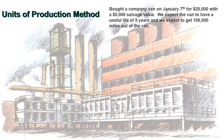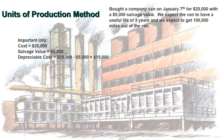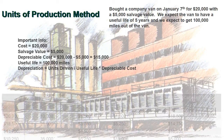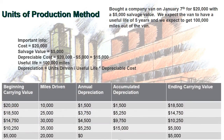The third method is units of production. The important information: cost is $20,000, salvage value is $5,000, and depreciable cost is $15,000 — same as before. However, useful life is now expressed in miles: 100,000 miles, not years. To calculate depreciation, take the units driven divided by the useful life of 100,000 miles, then multiply by the depreciable cost of $15,000. The table includes a column for miles driven to record that information.